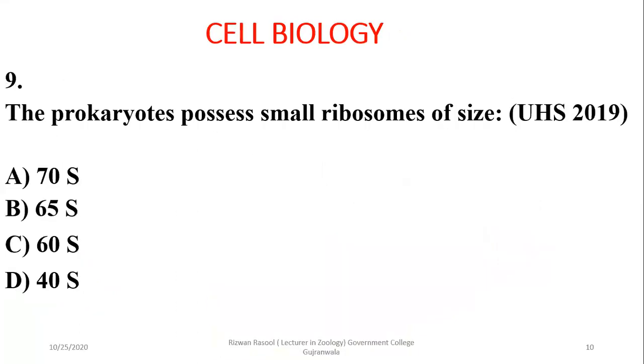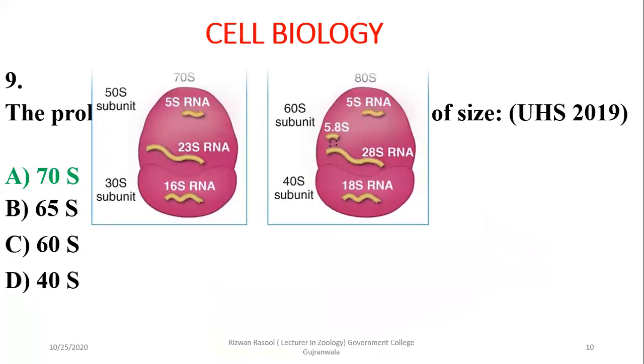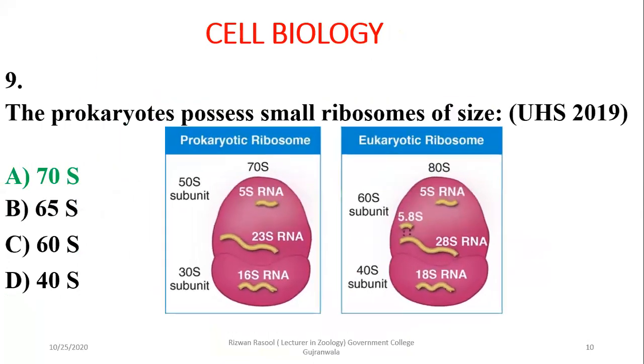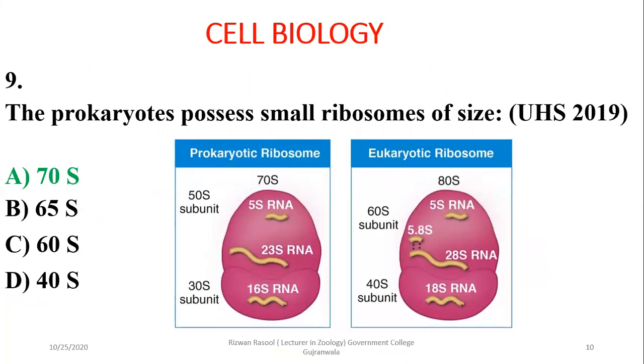Question 9: Prokaryotic cells possess small ribosomes which are 70S, while eukaryotic ribosomes are 80S.